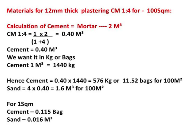For 1:4 ratio, cement part is 1 into 2 cubic meters divided by (1+4), giving 0.4 cubic meters of cement. Converting to kg and then to bags gives 11.52 bags of cement for 100 square meters. For sand, 4 times 0.4 cubic meters equals 1.6 cubic meters for 100 square meters.